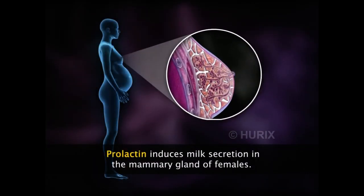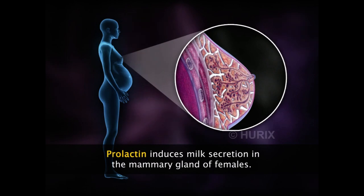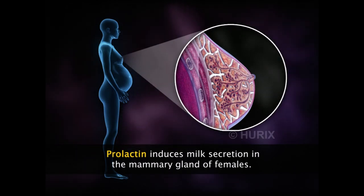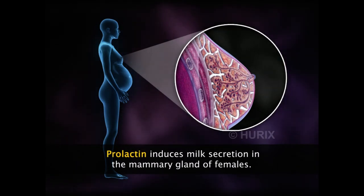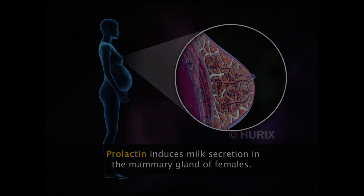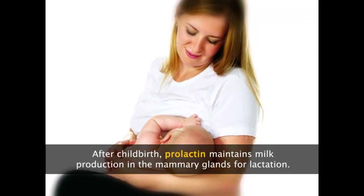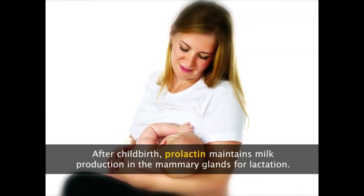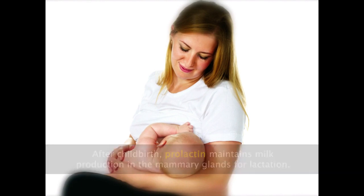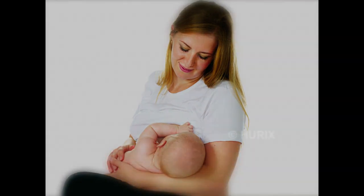Another hormone is prolactin. This hormone induces milk secretion in the mammary glands of pregnant women. After childbirth, prolactin exerts its effect on the mammary glands and maintains the production of milk or lactation.